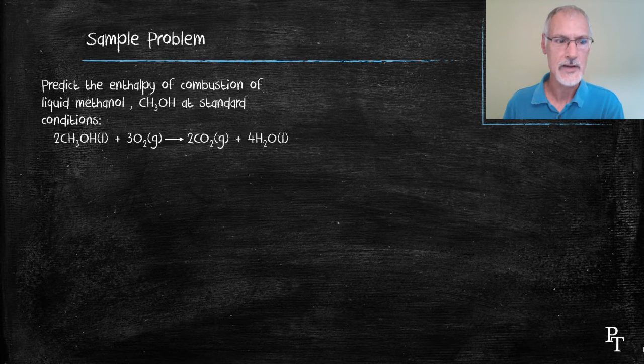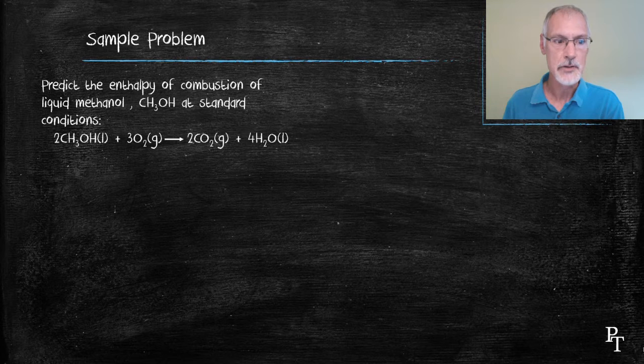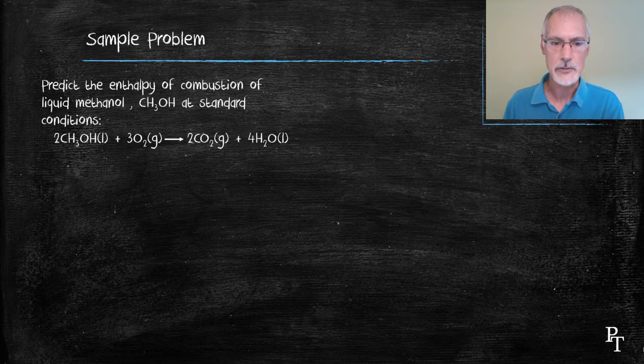Let's look at a sample problem in terms of how this might work. I want to take the fuel methanol and burn that fuel to make carbon dioxide and water. Here, let's map out our strategy.